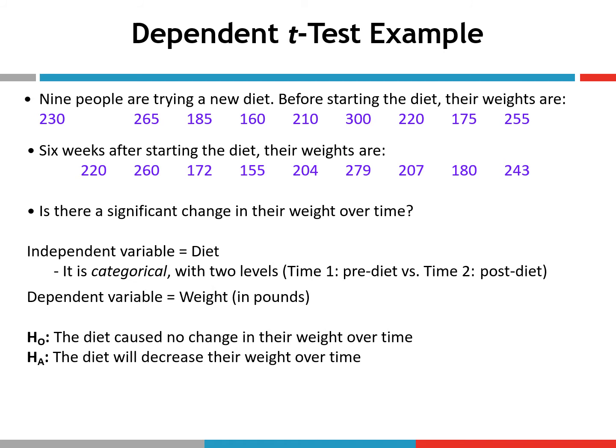Our null hypothesis is that there is no difference in the scores obtained at time one and the scores obtained at time two — in other words, the diet will cause no change in the participants' weight over time. The research hypothesis is that the diet will decrease their weight over time. Because we're positing that scores will change in a specific direction, this is a directional hypothesis, which means we will conduct a one-tailed dependent t-test when looking at our critical value table.